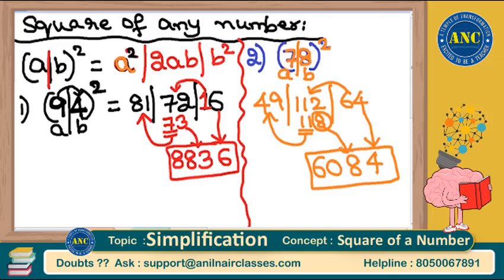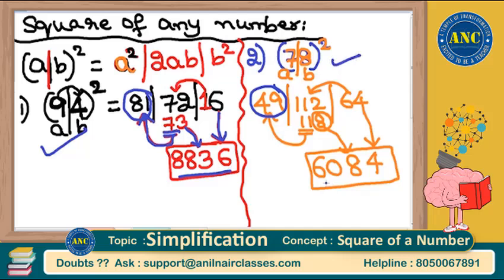Other than the leftmost digit, in all the remaining places, take down the unit digit and carry forward the remaining digit to the next position. That is the logic. 94² = 8836, 78² = 6084.